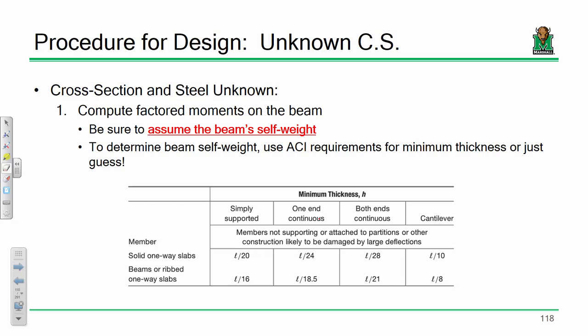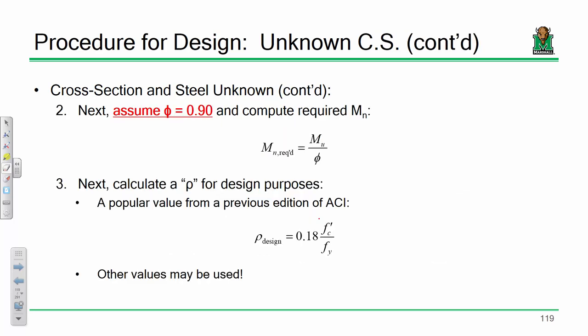Step one: compute factored moments — dead loads, live loads, 1.2 dead, 1.6 live, etc. Step two: since φMn must be greater than or equal to Mu, Mn must be greater than or equal to Mu/φ. We can determine the required Mn by taking Mu and dividing by phi. We don't technically know phi yet, but we want it to be 0.9, so we assume phi = 0.9 — another assumption we'll have to check.